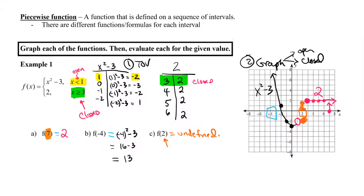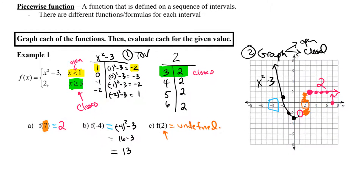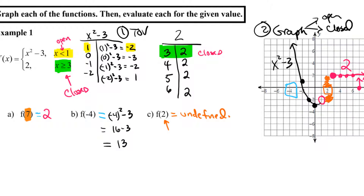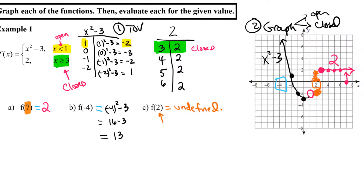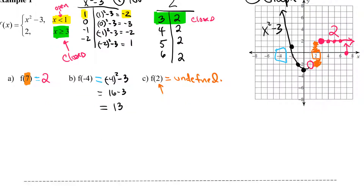Let's recap a little bit from example number one. Remember, there are only three steps when you do these. One is to make a table of values for each piece. Number two is to graph each piece, paying careful attention to where you're going to have the open or closed dots. And then part three is to evaluate them, given the x value, in the correct piece. You only evaluate it in one piece, not every single piece.